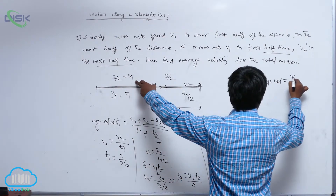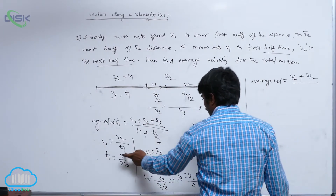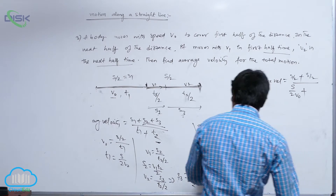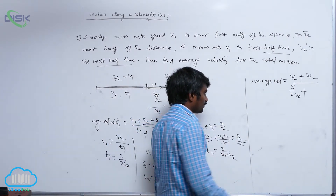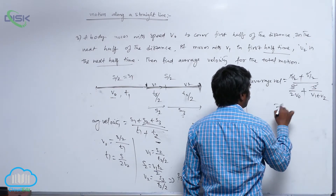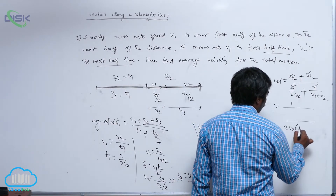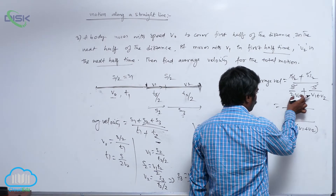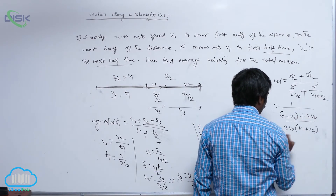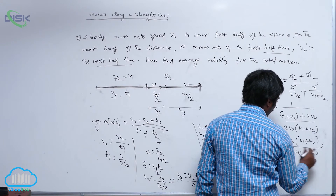Now substituting into the average velocity formula: the numerator is s1 plus s2 plus s3, which is S/2 plus S/2 equals S. The denominator is t1 plus t2, which is S/(2v0) plus S/(v1+v2). Taking S out from the denominator and canceling with S in the numerator, we get 1 divided by 1/(2v0) plus 1/(v1+v2). Taking the LCM as 2v0(v1+v2), we get 2v0(v1+v2) divided by (v1+v2+2v0).